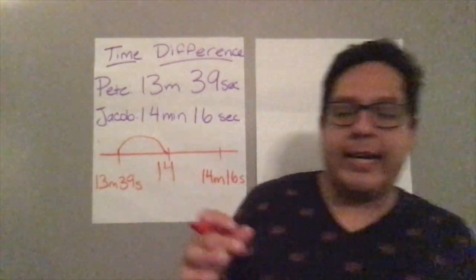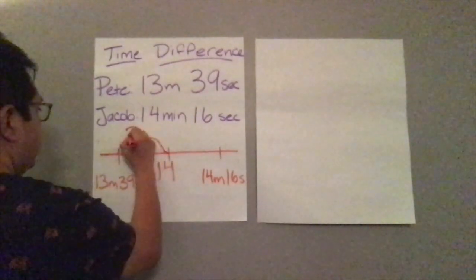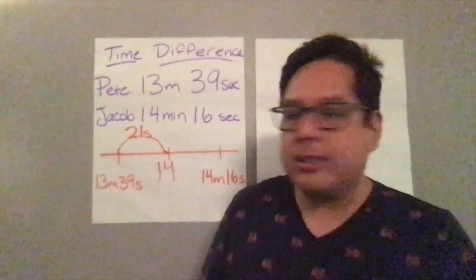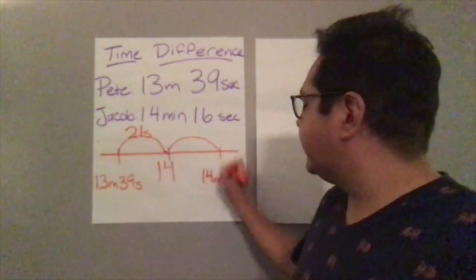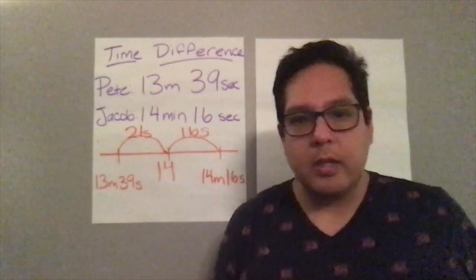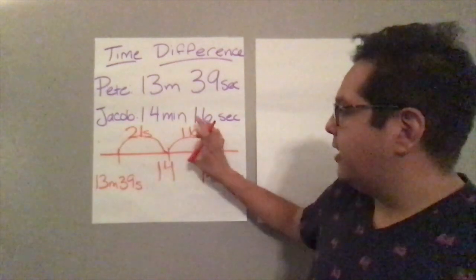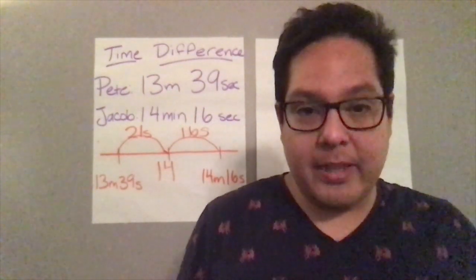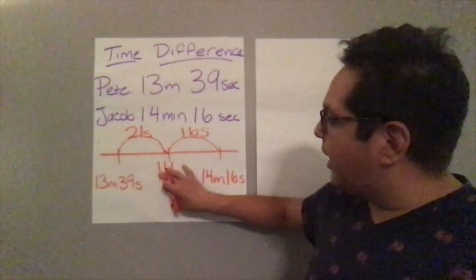If we subtract 39 from 60 seconds, we would need 21 seconds to reach 14 minutes. Then from 14 minutes to 14 minutes and 16 seconds, we have 16 seconds. So to figure out the difference between Pete's and Jacob's times, we take the seconds here and the seconds there and add them up. I'm not going to do all the work for you because you have to do corrections — so figure out what 21 seconds plus 16 seconds gives you as the difference between the two times.